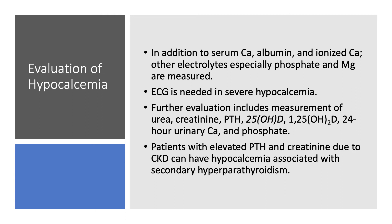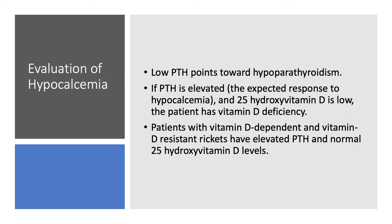Low PTH points towards hypoparathyroidism. If PTH is elevated as expected with hypocalcemia, and we have low 25-hydroxy D, then the patient has vitamin D deficiency — replace D and you're done. You can go with D2 ergocalciferol or D3 cholecalciferol. Some patients have rare conditions — vitamin D-dependent rickets or vitamin D-resistant rickets — and those patients have elevated PTH with normal 25-hydroxy D. These cases are mainly seen by pediatric nephrologists or rheumatologists; as an adult nephrologist, you'd be lucky to see one case every 10 to 20 years.